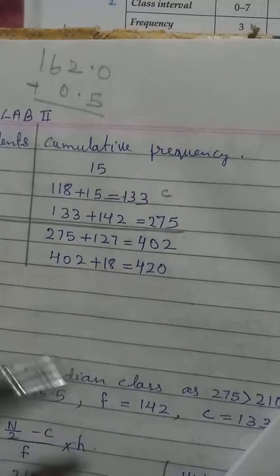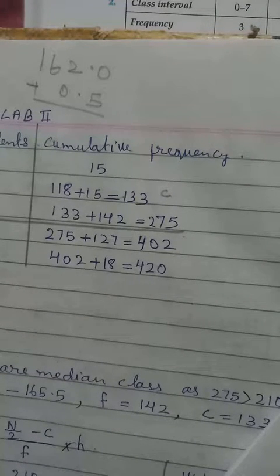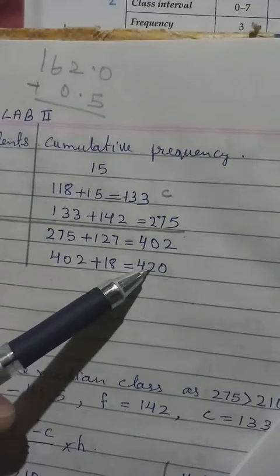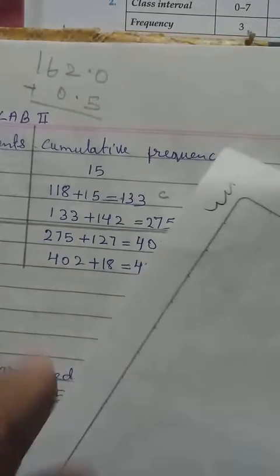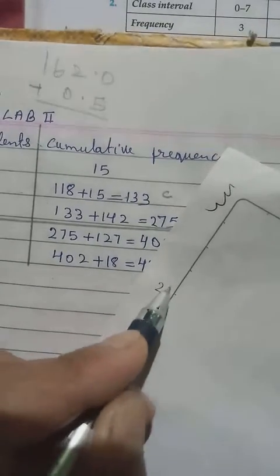If you have exactly 210, you take it. If you don't have, take greater than it. So if compared to all this, we see that we have 210.